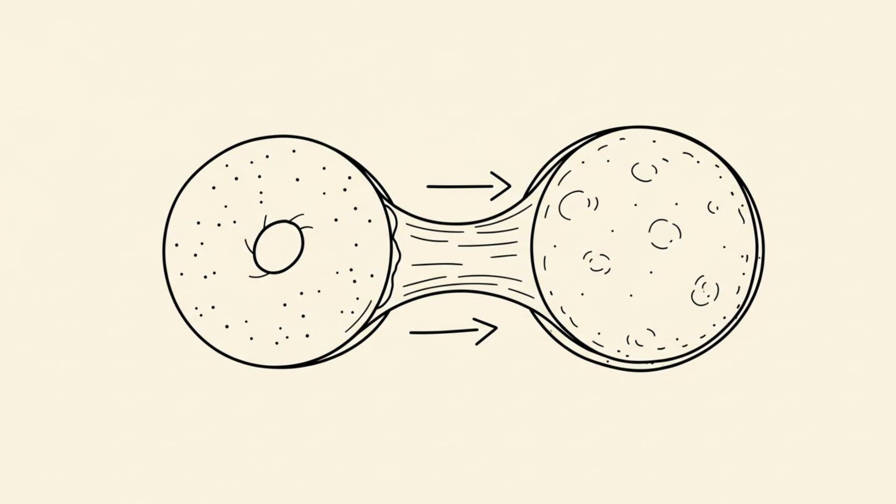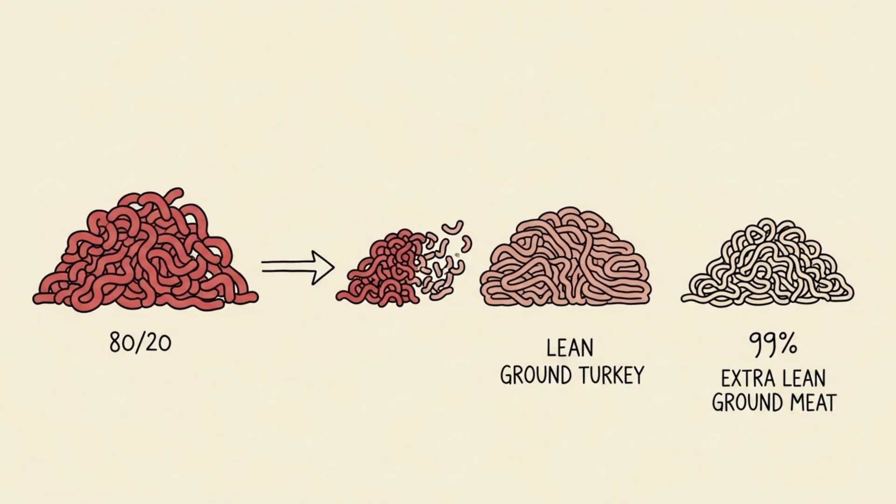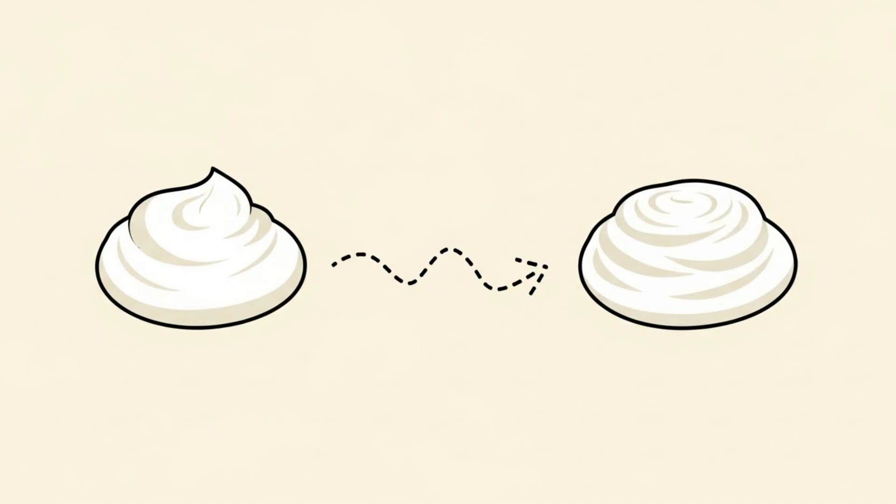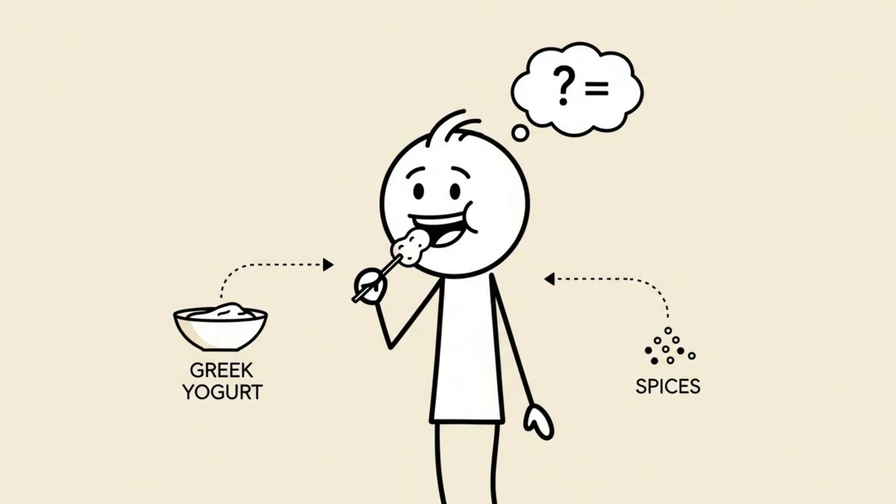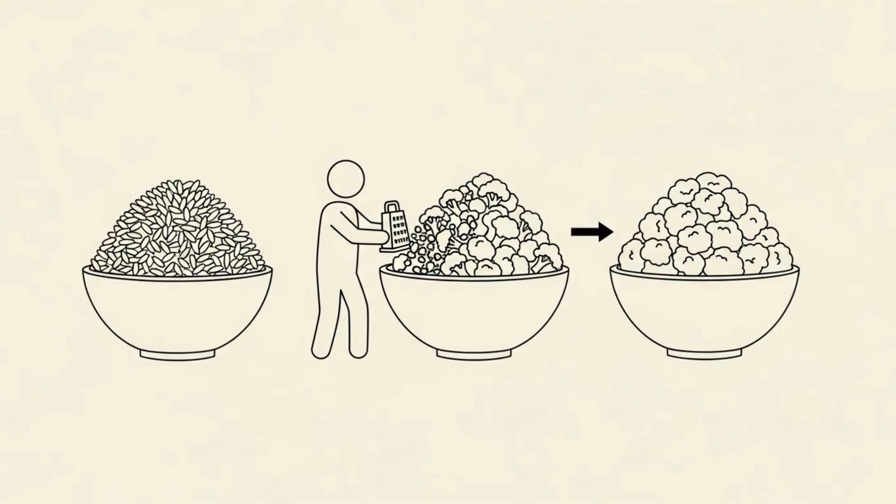Swap your bagel for a low-carb tortilla. Swap 80-20 ground beef for 93-7 lean ground turkey or even 99% lean. Swap sour cream for non-fat Greek yogurt. I promise you cannot taste the difference when it is mixed with spices. Swap white rice for cauliflower rice or do a 50-50 mix.